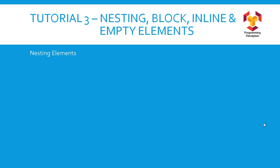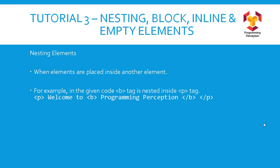So let's see nesting elements. When elements are placed inside another element it is known as nesting elements. For example, in this line you can see there is a paragraph in which the content is 'Welcome to Programming Perception', but the 'Programming Perception' text itself is enclosed inside the b tag. Now the p tag represents paragraph and the b tag represents bold. Clearly you can see this b tag is nested inside this p tag, so we can definitely nest one element inside another.